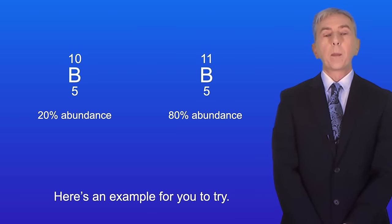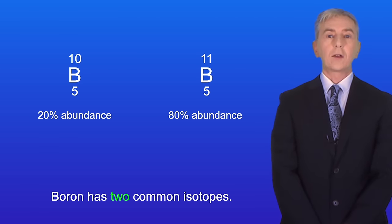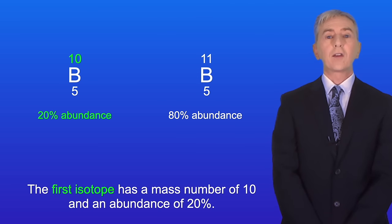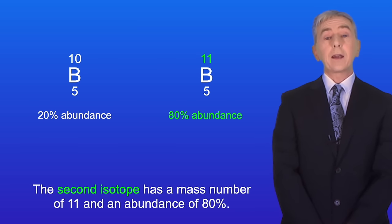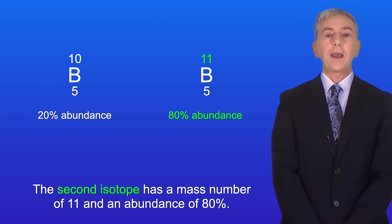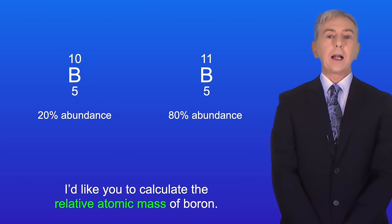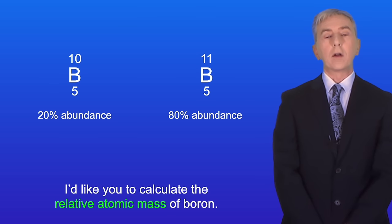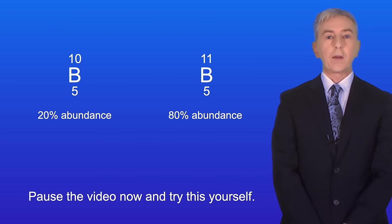Here's an example for you to try. Boron has two common isotopes. The first isotope has a mass number of 10 and an abundance of 20 percent. The second isotope has a mass number of 11 and an abundance of 80 percent. I'd like you to calculate the relative atomic mass of boron. So pause the video now and try this yourself.